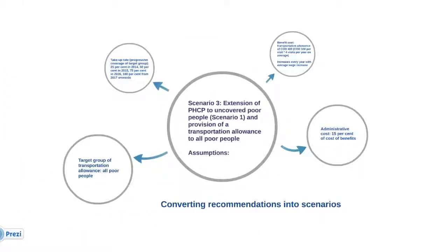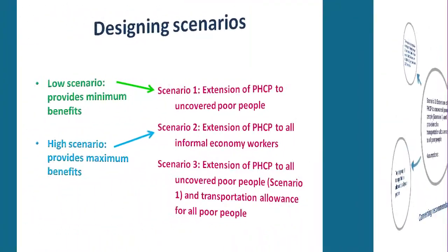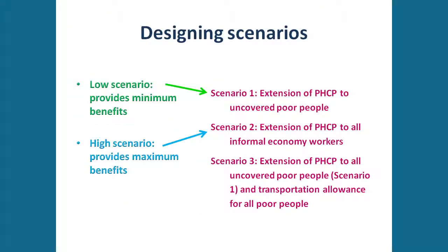Now let's take a look at low and high scenarios. A low scenario provides a minimum level of benefits, and is usually the least expensive to implement. In this case, scenario 1 — for extension of PHCP to uncovered poor people — may be defined as the low scenario.